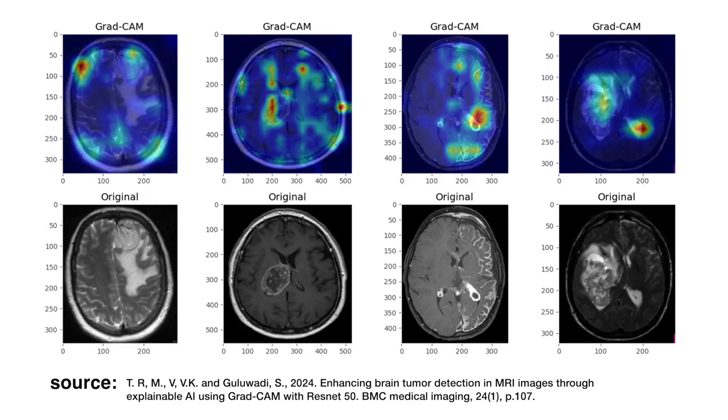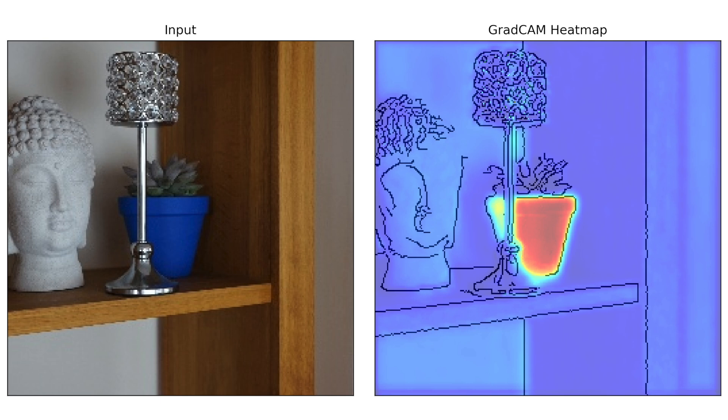This is where GradCam comes in. It is an explainable AI method that can tell the doctor what part of the x-ray image was used to make the classification. It could potentially point out the exact collection of cells that make up the tumour. In general, GradCam is used to explain convolutional neural networks by highlighting the pixels or regions of an image that are important for a given classification. This is known as a heat map.